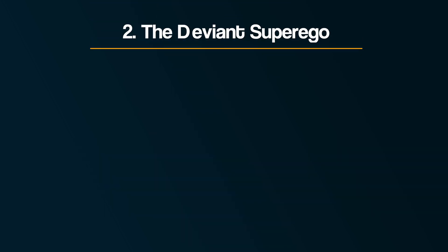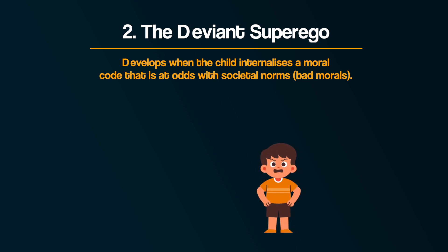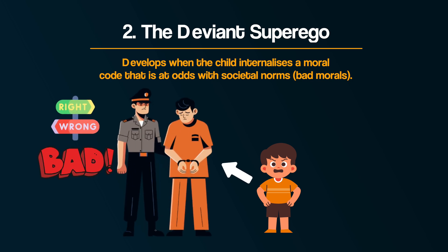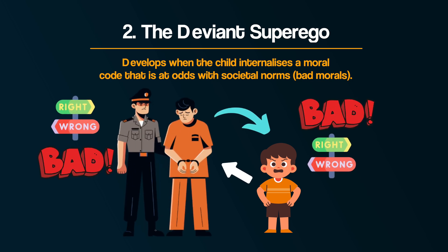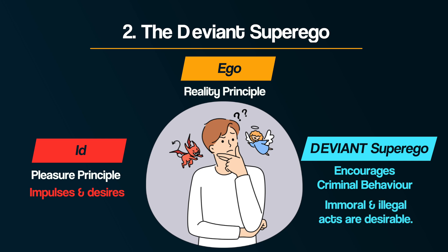Number two: the deviant superego. A deviant superego develops when the child internalises a moral code that is at odds with societal norms. This can happen if a child is raised in an environment where their same-sex parent, their role model, is a criminal themselves. If they identify with these individuals, they will internalise their criminal moral values. As a result, the child's superego encourages criminal behaviours, leading them to believe that illegal or immoral actions are justified or even desirable.